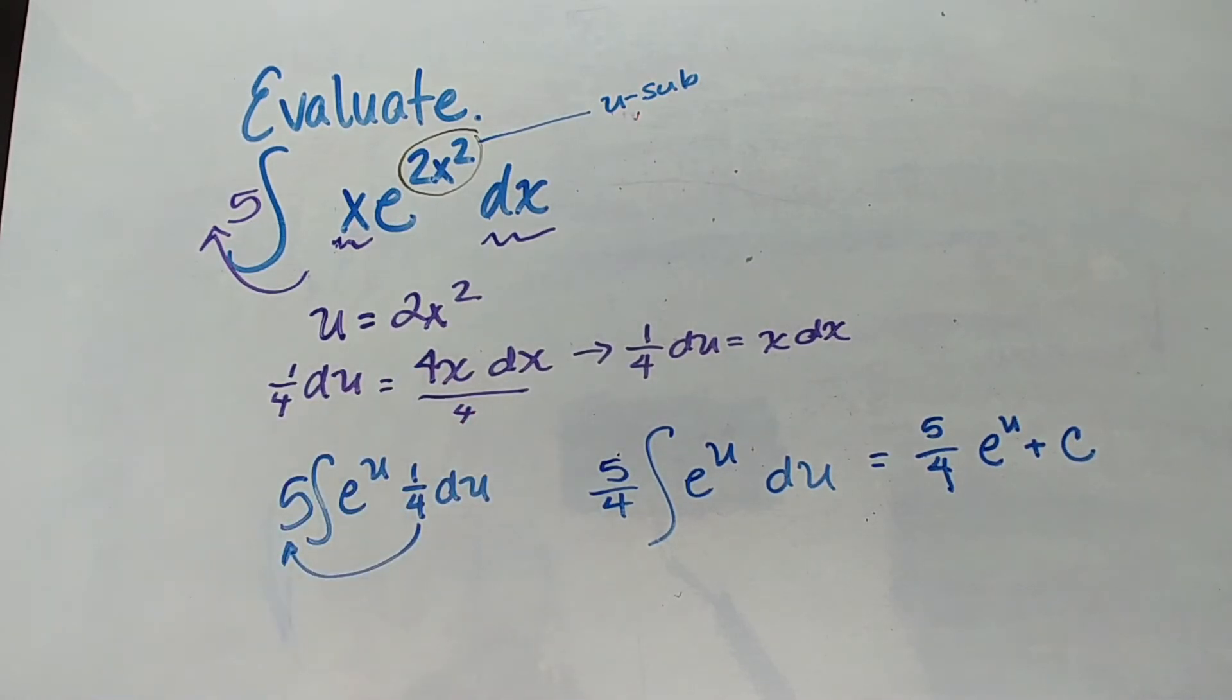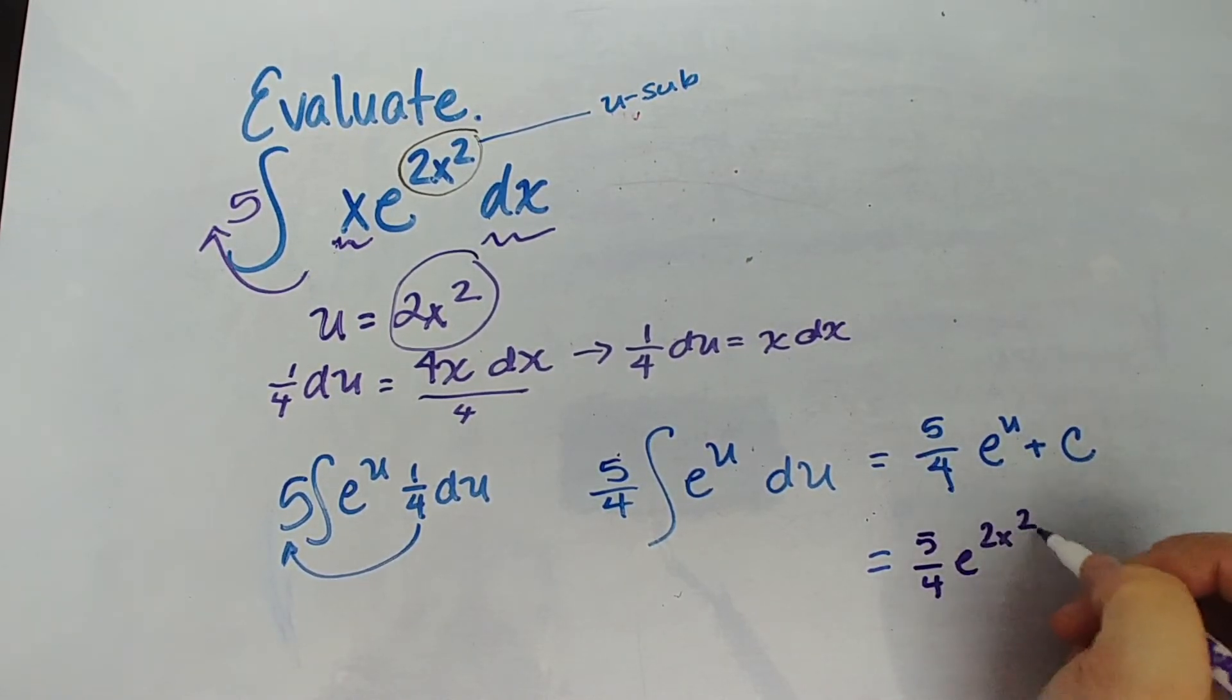Nope there was an x which means we can't leave it like this. So we're just going to sub back in. So what is our u again? Our u is two x squared. Remember it was the ugliness. So this is going to be five-fourths e to the two x squared plus c. You are done.